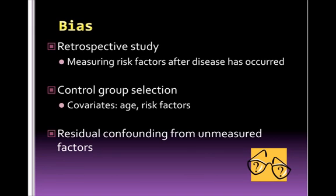Taking into account bias is essential to the proper interpretation of case control studies. Due to the fact that case control studies are retrospective, there is the possibility that the risk factor has occurred after the disease. It is also important to critically assess the control group subjects. These subjects should be similar to the case patients, especially in terms of other risk factors and covariates. For example, when comparing patients who have received clodostrapsin to controls, you would want to ensure that the control group had a similar mean age and approximately the same number of comorbid conditions. As with any retrospective study design, there may be residual confounding from unmeasured factors that cannot be corrected with statistics.